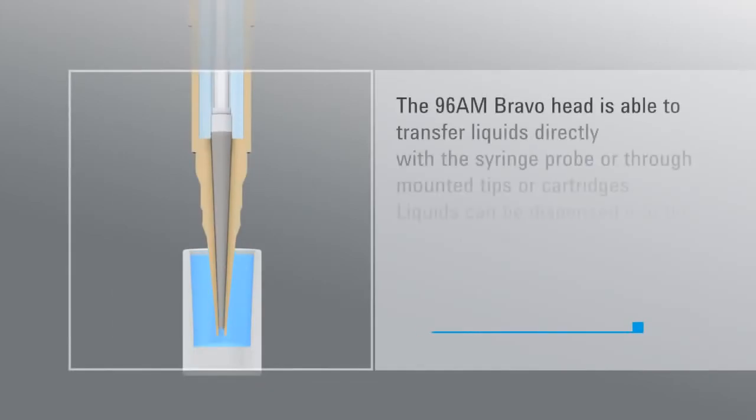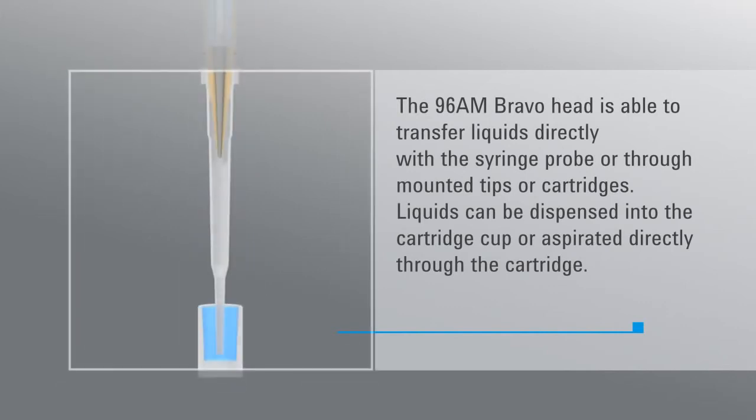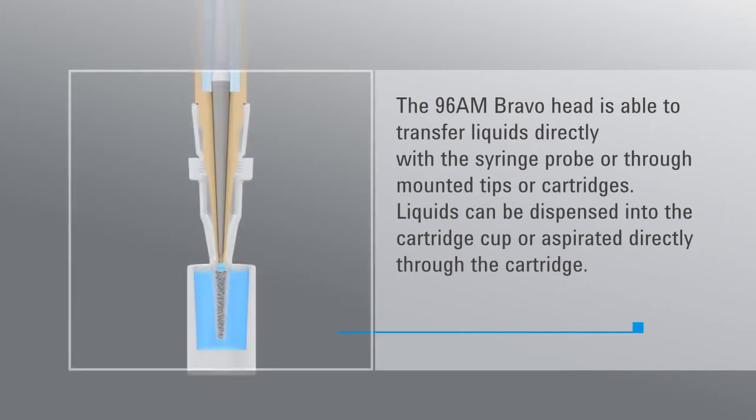The Bravo 96AM can transfer liquids directly using the syringe probe or through mounted pipette tips or AssayMap cartridges. Liquid can flow in either direction to the cartridge, enabling sample washing and recovery in the syringe or in a microplate. The Bravo liquid handler enables whole plate, row and column, and single tip liquid transfers.